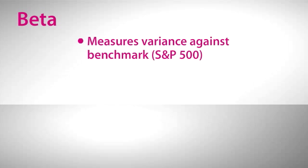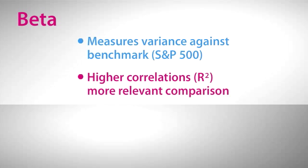So in summary, remember that beta measures the variance of a stock against a benchmark, usually the S&P 500. But whatever a stock's beta is compared to the S&P 500, a low correlation may mean that the beta isn't a very reliable indicator.